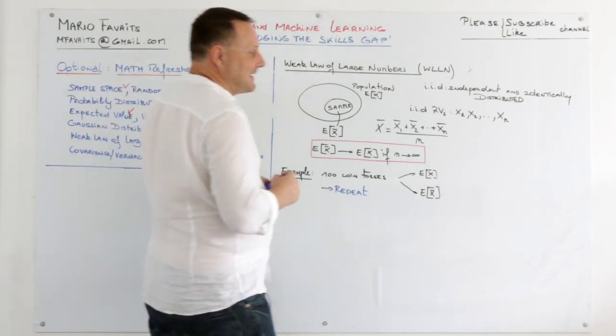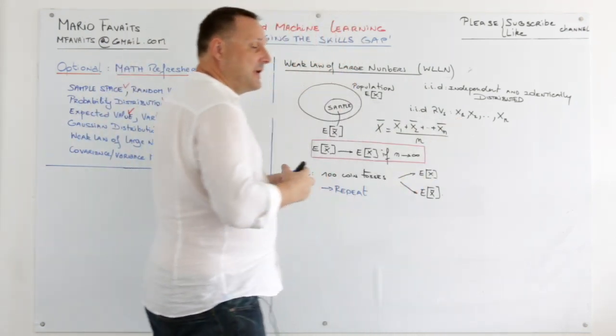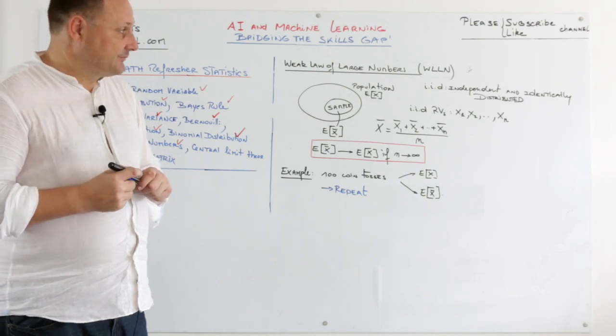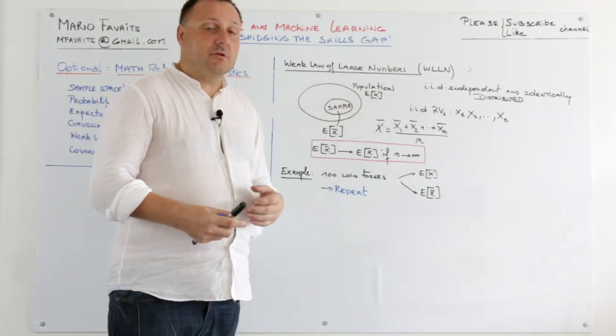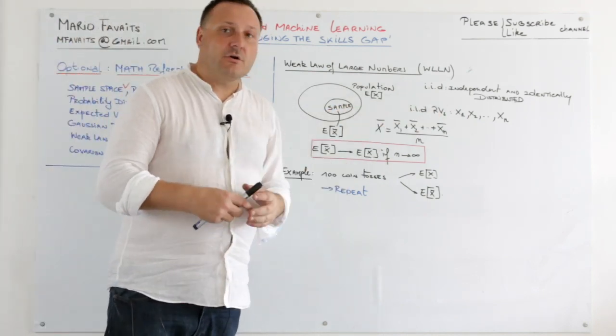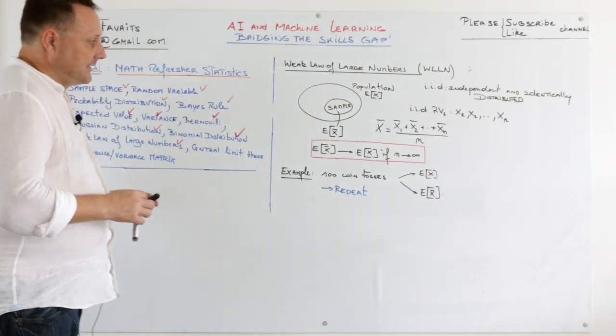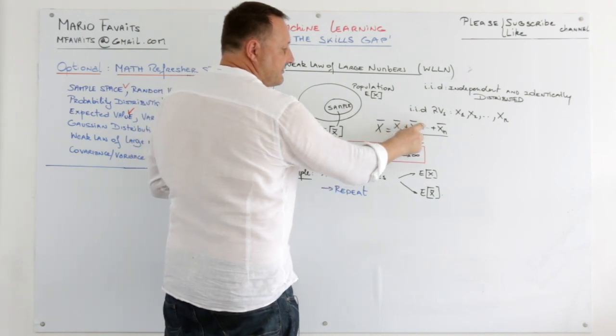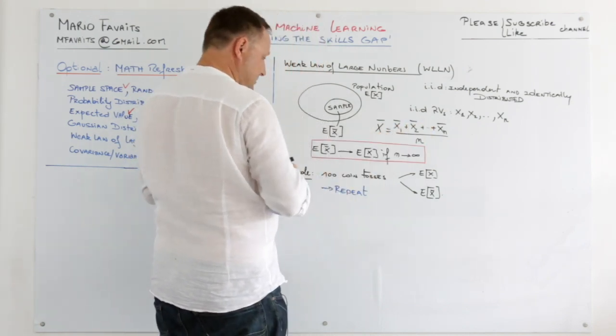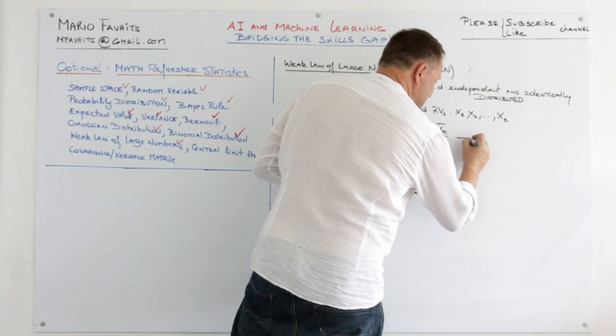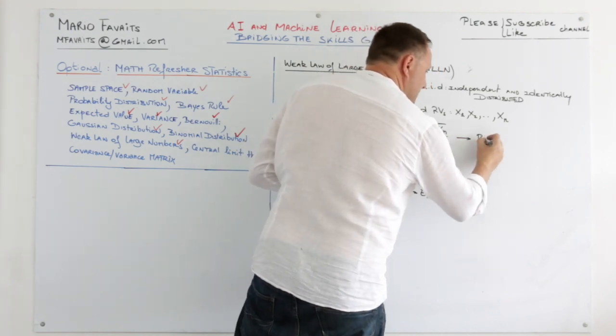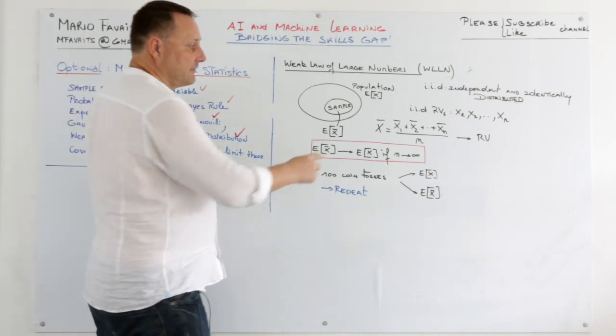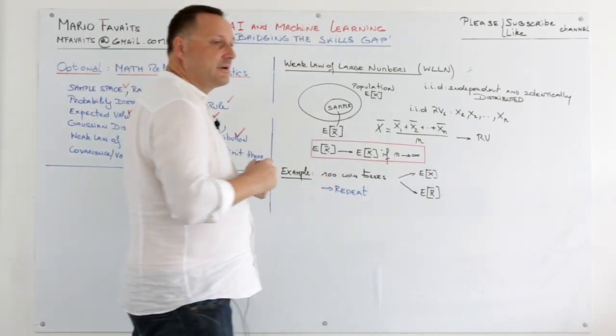Independent means that the decisions you make for X1 has no influence on X2. Identically distributed you can assume that all of these are Gaussian. So the sample mean is the sum of the means of all these random variables. And since it is a sum of random variables, the mean is also a random variable.